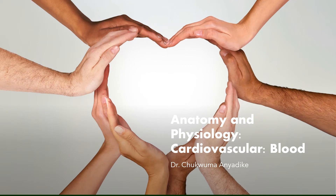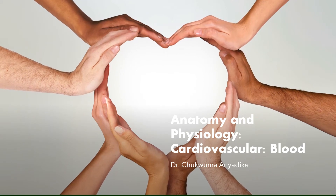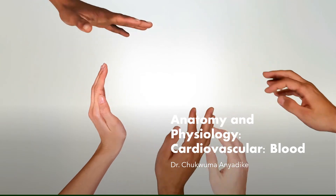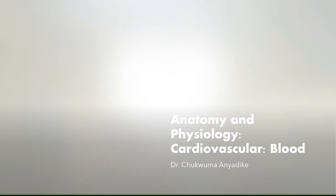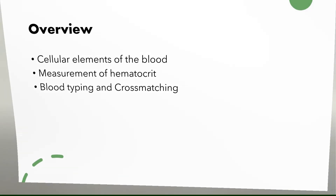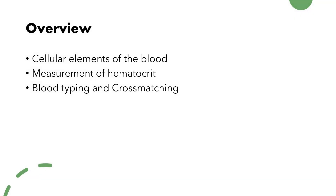Today's lecture in anatomy and physiology is on cardiovascular blood. The overview of what we're going to be talking about today includes the cellular elements of the blood, measurement of hematocrit, as well as blood typing and cross-matching.